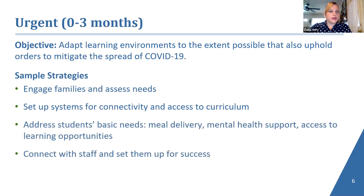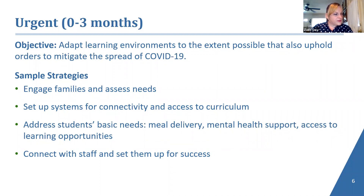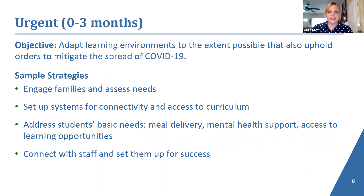Looking at sample strategies for the urgent phase: we're talking about strategies that engage families and assess needs. The relationship between the teacher and the parent is critical — that communication allows teachers to gauge what support a specific student needs during distance learning. Systems of connectivity and access to curriculum means not only having access to the technology, but ensuring everyone knows how to use it, what the expectations are, and where to get help. Also strategies for addressing basic needs, and setting up your staff, teachers, aides, and specialists with all the information, resources, and training they need to be successful in this new environment.